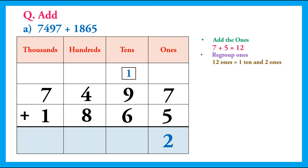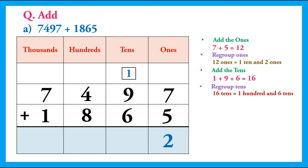After this we will add the tens column. In the tens column we have 1 plus 9 plus 6, that is equal to 16. So we will regroup the tens. 16 tens is equal to 1 hundred and 6 tens. We will write 6 in the tens column and carry 1 to the hundreds column.